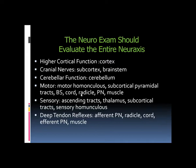When localizing cortical lesions, first determine the patient's handedness, which determines hemispheric dominance. Most right-handed patients have a dominant left hemisphere; left-handed patients typically have a dominant right hemisphere. The handedness of the patient is the first thing to establish.